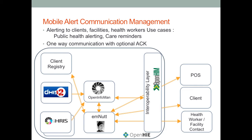We also allow, assuming that the interoperability layer permits it, different point-of-service applications to trigger alerts. So a point-of-service application — whether it's OpenMRS or some other mHealth or eHealth application — can send a message to a health worker or client with just a reference. MNUT would then be in charge of determining the correct channel, whether that's SMS, email, or system-to-system, to communicate that message out. This makes message delivery a lot simpler.